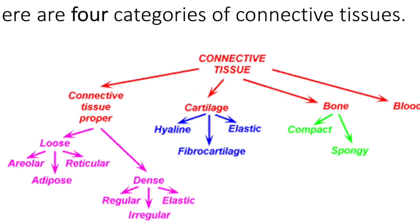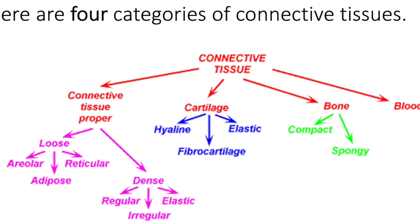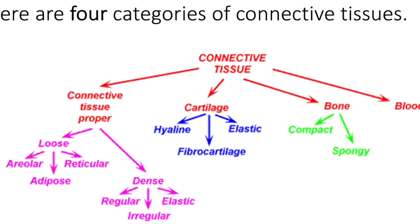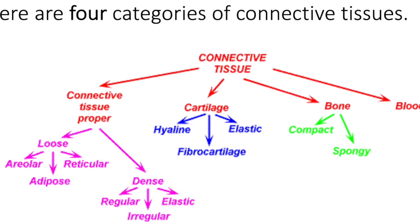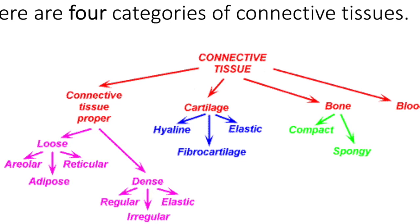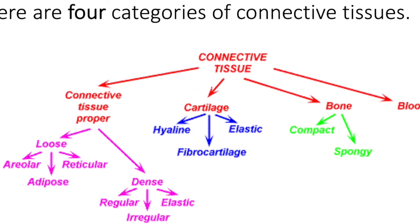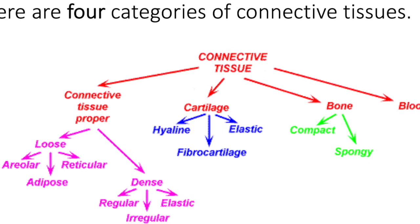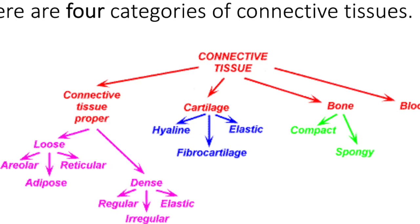The difference between the two subcategories is that loose connective tissue has more ground substance and fewer fibers, while dense connective tissue has less ground substance and more fibers. Let's get started examining each of these connective tissues.